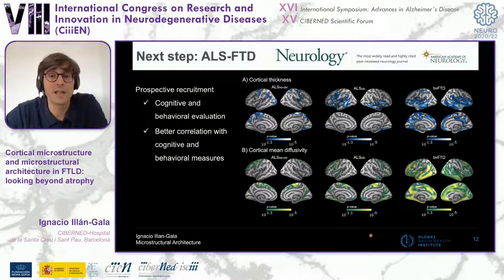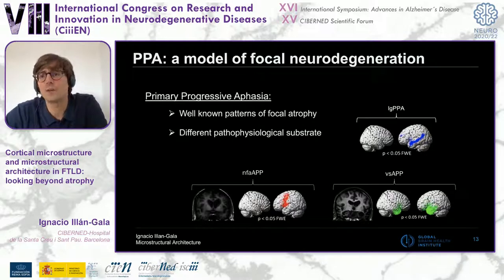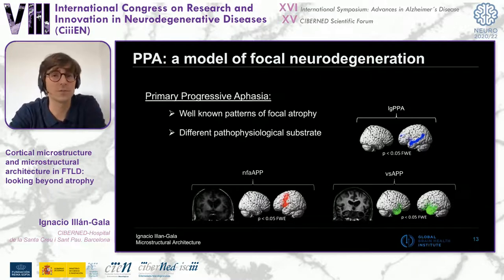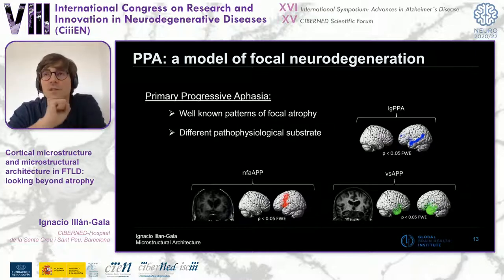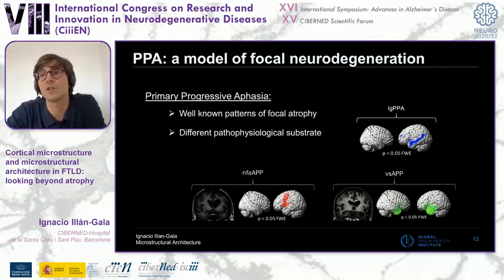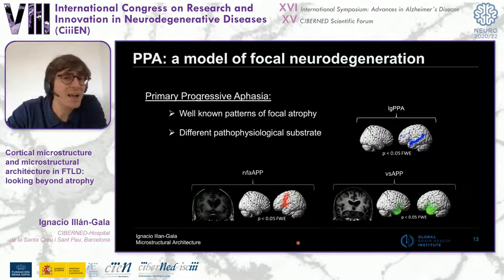Recently I received my first health project grant to pursue this research line. Next, I decided to work with patients with primary progressive aphasia — patients presenting with speech and language difficulties dominating the clinical picture. Each of the three main PPA variants — logopenic, semantic, and non-fluent — is characterized by a focal pattern of neurodegeneration. We just submitted a paper exploring cortical mean diffusivity in PPA, now under review in Neurology. But today I want to share preliminary data on a novel imaging biomarker.